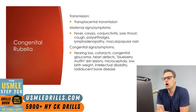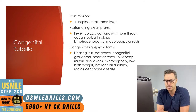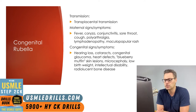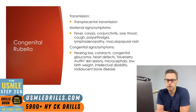Let's move on now to the R of the TORCH infections, which stands for rubella. Rubella is a preventable disease when the mother is vaccinated prior to pregnancy. This virus is transmitted transplacentally, with the greatest risk of developing congenital rubella if contracted before 20 weeks gestation. Maternal symptoms of rubella include fever, coryza, conjunctivitis, sore throat, and cough.